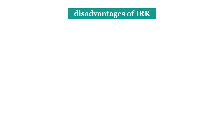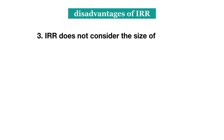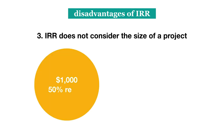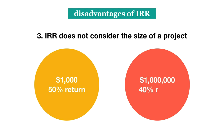Thirdly, IRR does not take into account the scale of the project. For example, let's compare a $1,000 investment with a 50% return versus a $1,000,000 investment with a 40% return. Even though the first investment has a higher percentage return, it is not necessarily better. We can see that the second investment has a higher absolute, or dollar, return. If we can choose only one of these two projects — that is, if they are mutually exclusive — then we would choose the $1,000,000 investment, which maximizes our return in dollars and allows us to generate as much value as possible.